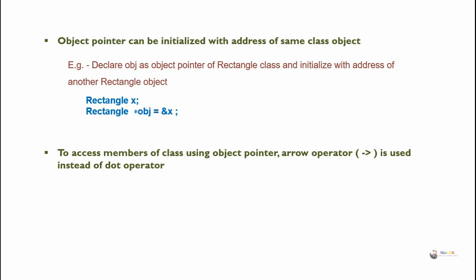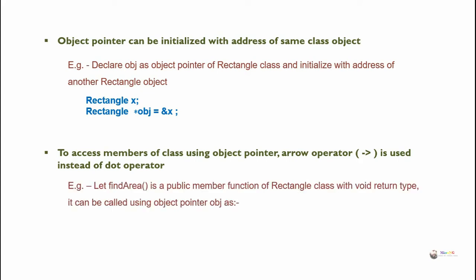To access members of a class using an object pointer, the arrow operator is used instead of the dot operator. For example, let find_area be a public member function of the rectangle class with void return type. It can be called using object pointer obj as: obj arrow find_area, or alternatively as star obj dot find_area.